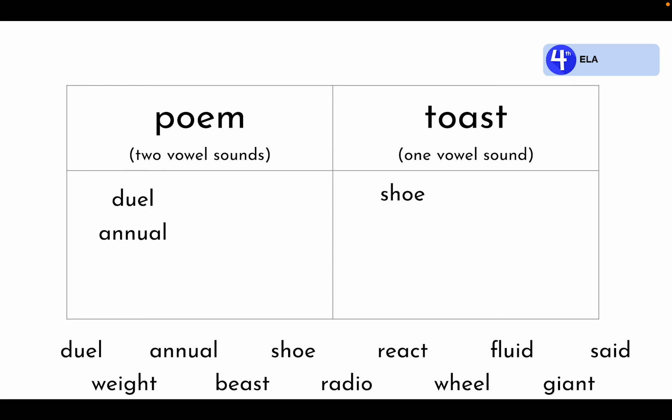Next is the word react. Where does this word belong? That's right — it belongs under poem. Here the e and a are not a vowel team. Instead, the word breaks into syllables in between the e and a. Re-act. React. Then we have the word fluid. It belongs under poem — it has two syllables and the syllable breaks in between the vowels. Flu-id. Then we have the word said. It belongs under toast. The a and i are working together to make the e sound.